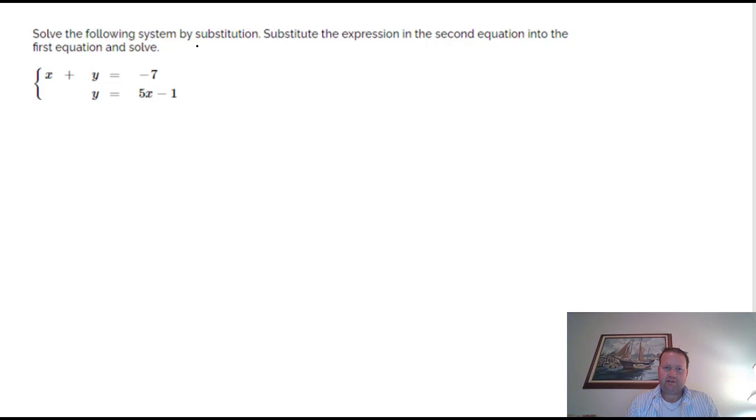We're looking at a system of equations and we're going to solve this one differently. You recall last time we started solving a system we graphed both equations, and if the two lines were to cross on an integer or whole number grid on the graph, then we would have a solution that would be pretty easy to do. We're going to try this a different way though.